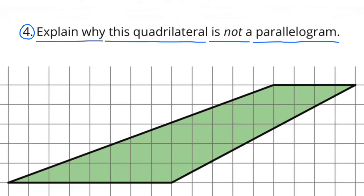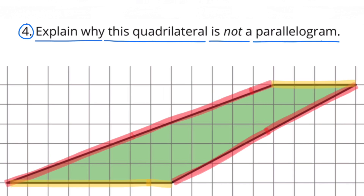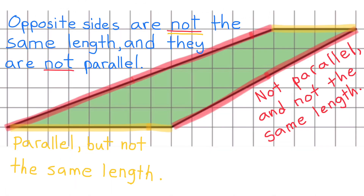Number 4. Explain why this quadrilateral is not a parallelogram. The opposite sides highlighted in red are not parallel and they're not the same length. The opposite sides highlighted in yellow are parallel, however they're not the same length. To be a parallelogram, the opposite sides would have to be parallel and be the same length.